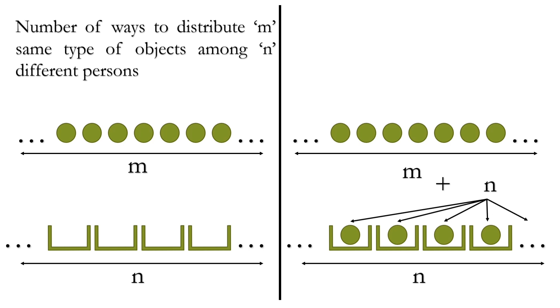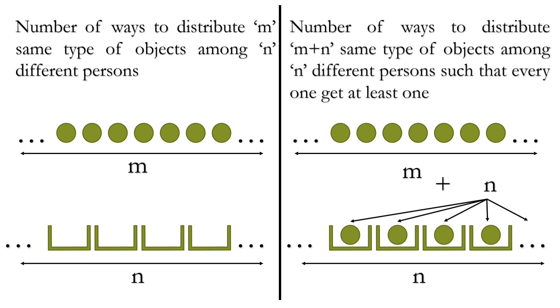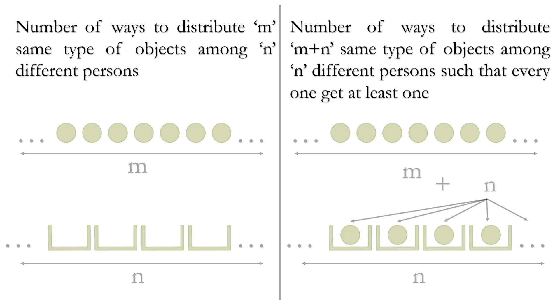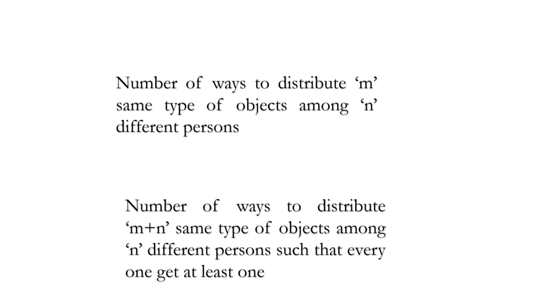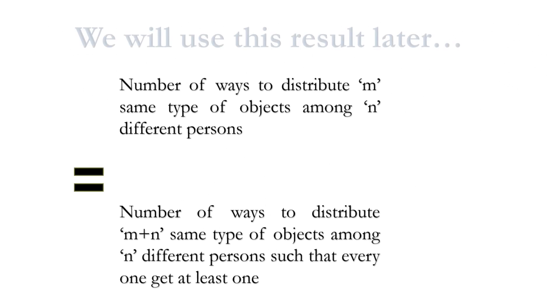So it is clear that the number of ways will remain same. But we can write this statement in a different way. The number of ways to distribute m plus n same type of objects among n different persons such that everyone get at least 1. So these two are equal. We will use this later in our question.